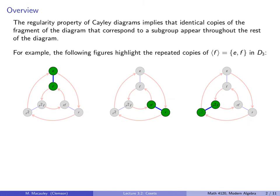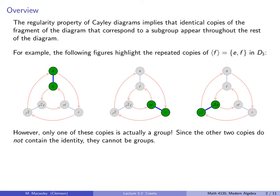For example, the following figures highlight the repeated copies of the subgroup generated by F in D3. Here is the subgroup in the Cayley diagram, and notice how there are identical copies of this subgroup in different parts of the diagram. Now only one of these copies is actually a group, namely this one, because it contains the identity. These other two copies don't contain the identity, so they can't be groups.